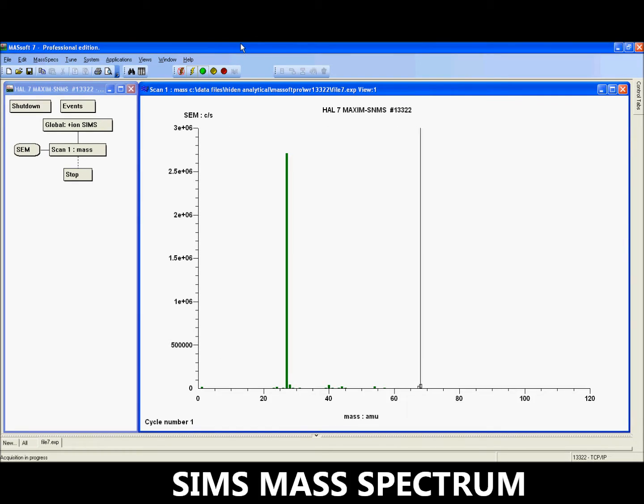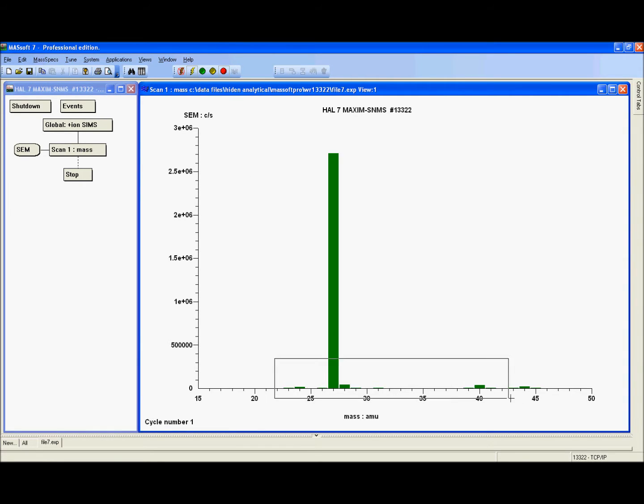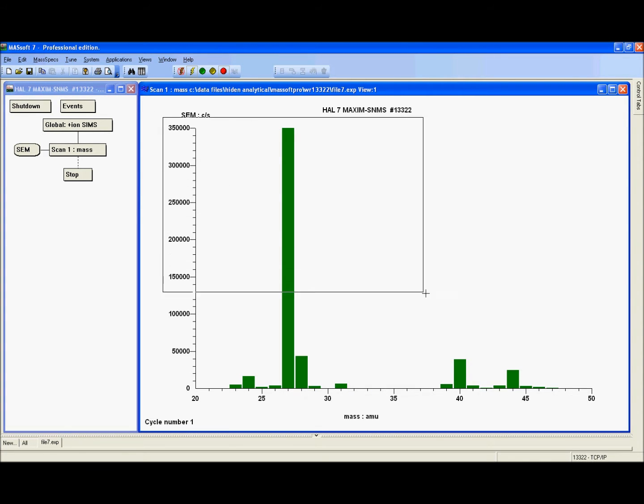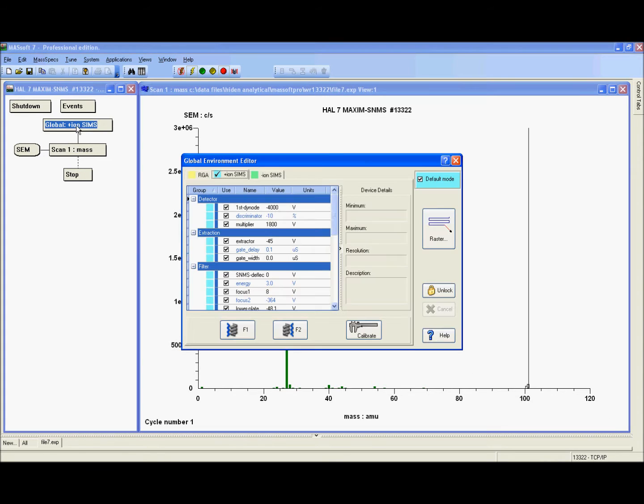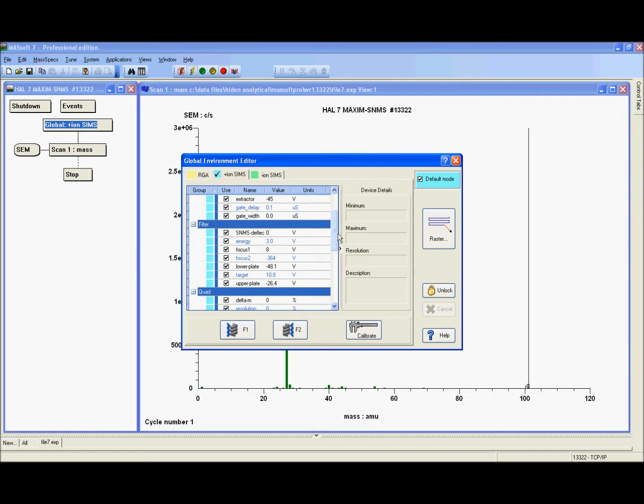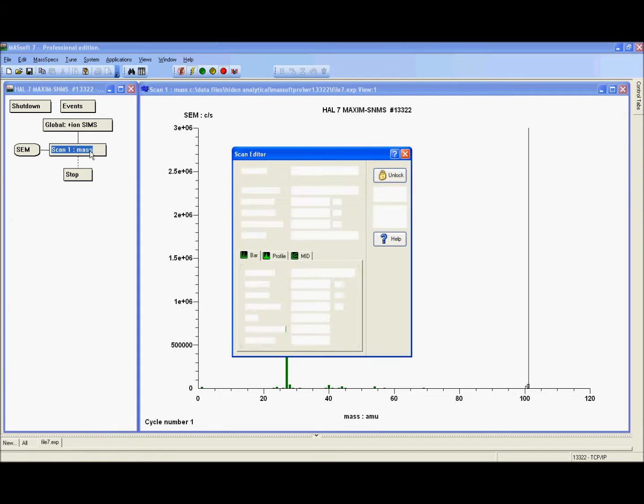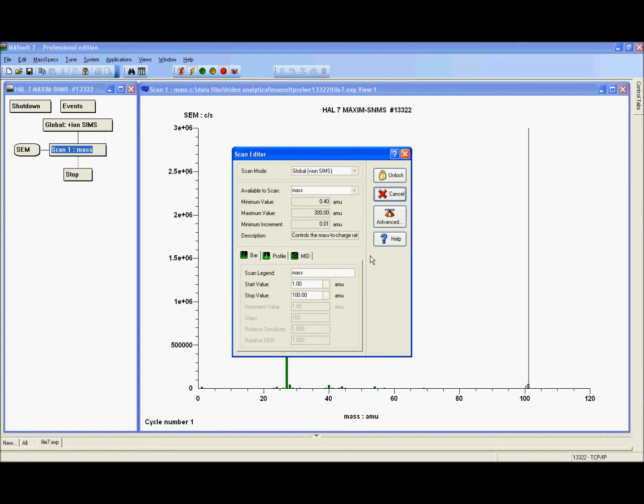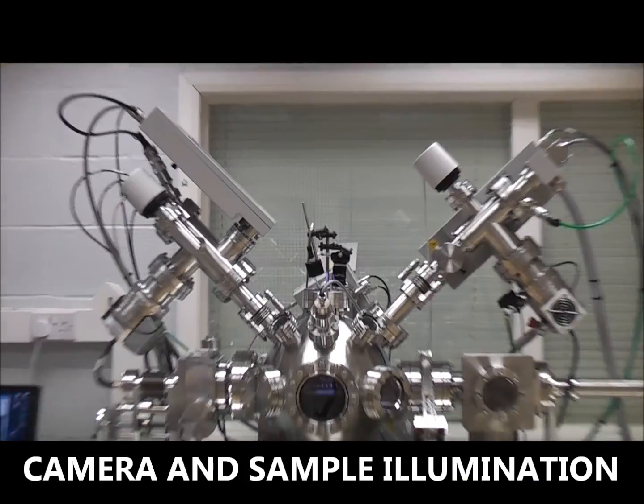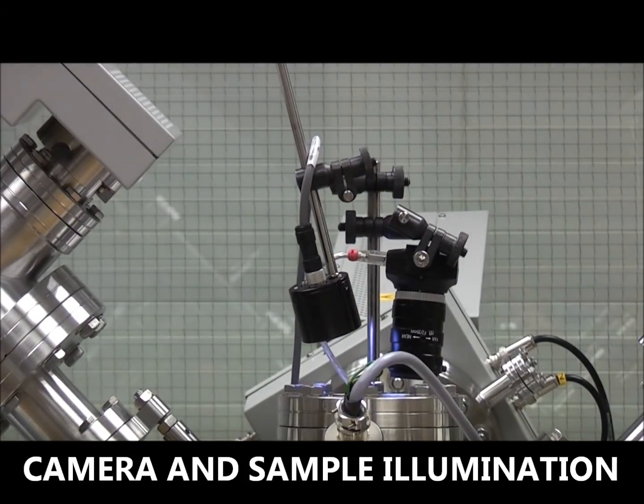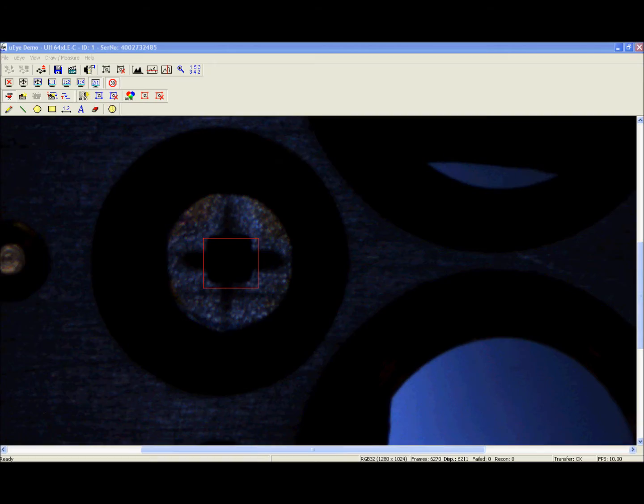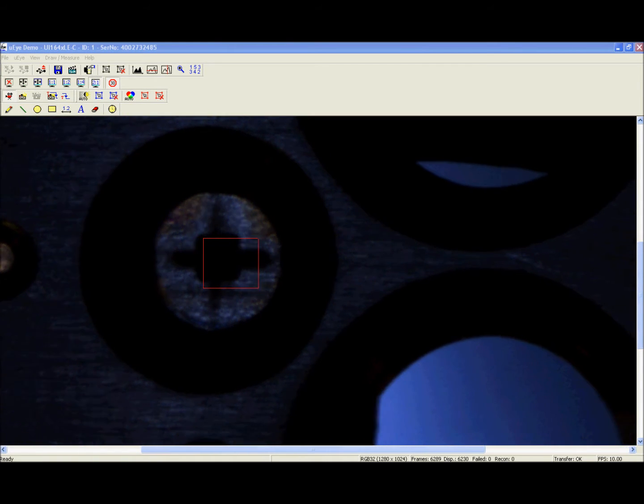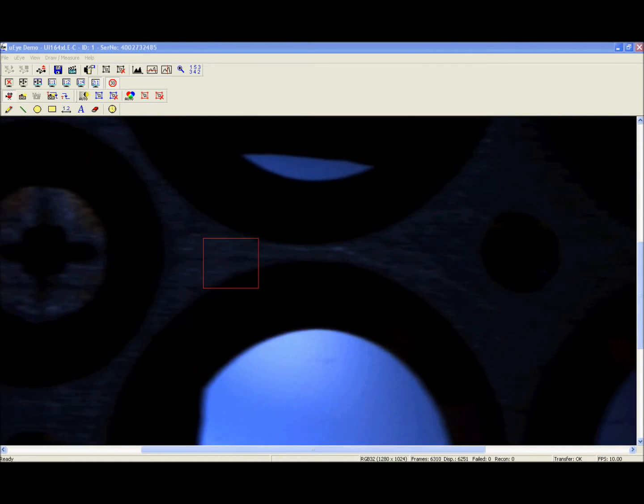Static SIMS mass spectra are easily acquired using the MassSoft software to control all the analytical parameters. A normal incidence camera permits accurate navigation. In this example, the crater of a depth profile analysis in silicon is seen to appear.